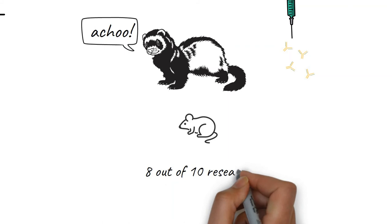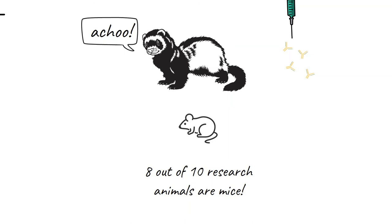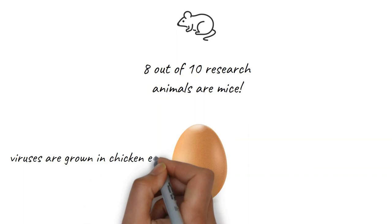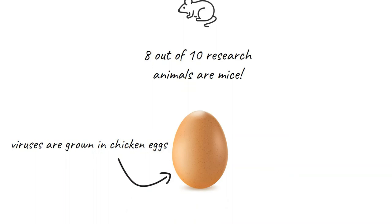But many other animals are essential in the hunt for new vaccines, especially the laboratory mouse, which is the most commonly used animal in science by far. Even chickens help save lives. The viruses we study are often grown in chicken eggs, another essential part played by animals in vaccine research.